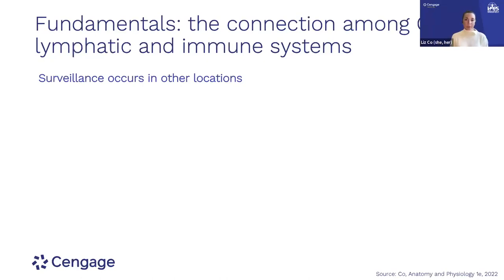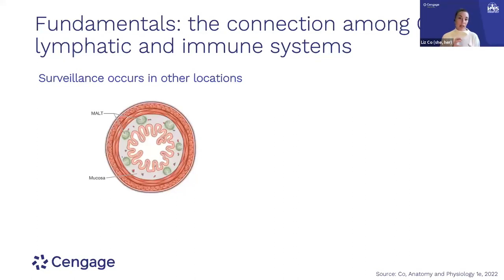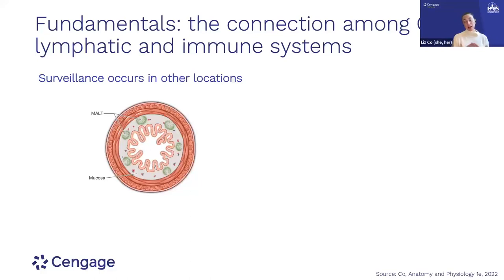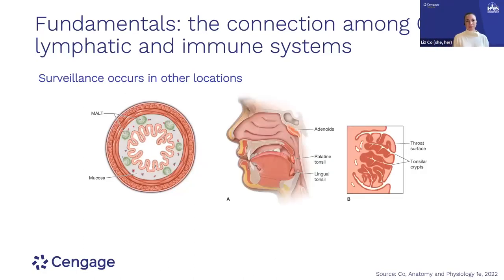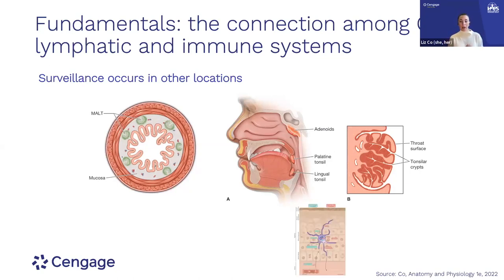Surveillance can occur in other locations as well. There's lymphoid tissue in the gut wall — mucosa-associated lymphoid tissue, or MALT — with little green patches throughout the gut. This is a really important place of surveillance because you take in all kinds of things through your mouth. We also have surveillance points within the pharynx — the tonsils and adenoids provide that opportunity for things we breathe, eat, and drink. And individual, one-cell-at-a-time surveillance happens in our skin, which makes sense as one of our contact points with the outside world.